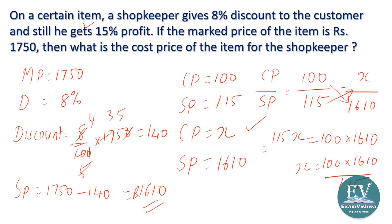So X equals 100 into 1610 upon 115. We solve this — these are multiples of 5: 100/115 simplifies, and 1610 divided by 23 equals 70. That means the cost price is 1400 rupees.